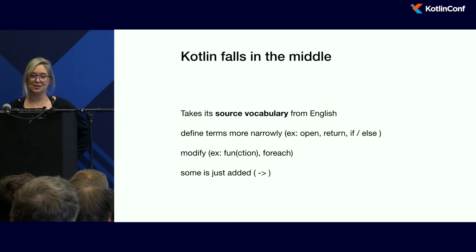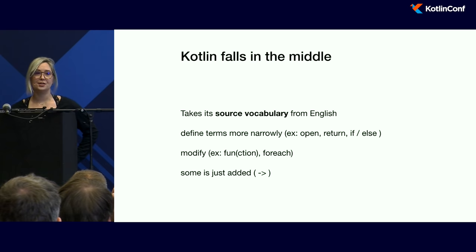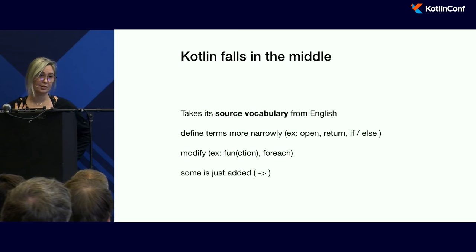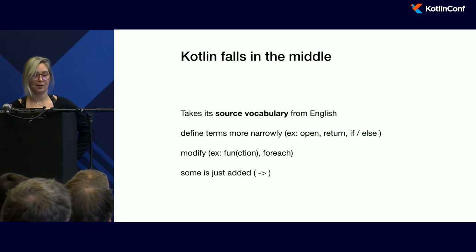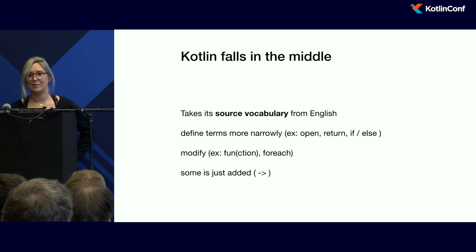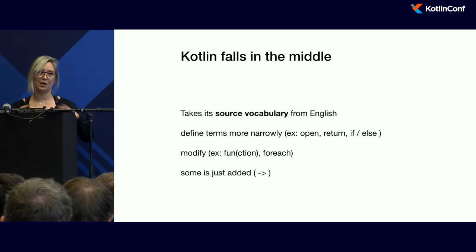Kotlin falls in the middle. Programming languages take a lot from natural language — for starters, most of their source vocabulary. In the case of Kotlin, luckily for me, that's English. Some words are redefined — like "function" becomes "fun" — and some are defined more narrowly, like "open," "if," "else." Some symbols are just logical symbols added in. But then we, the developers who are natural language speakers, supply the remaining parts: the names of methods, variables, and classes, and the large-scale structure and order by which we organize our code.